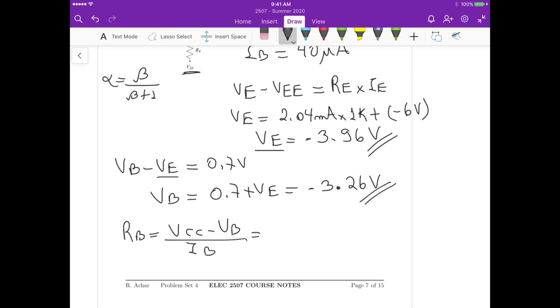And that's equals to 10 from VCC minus minus 3.26 divided by 40 microamperes. And this is around 331.5 kilo ohms. So that's the value of RB, that's our first answer.